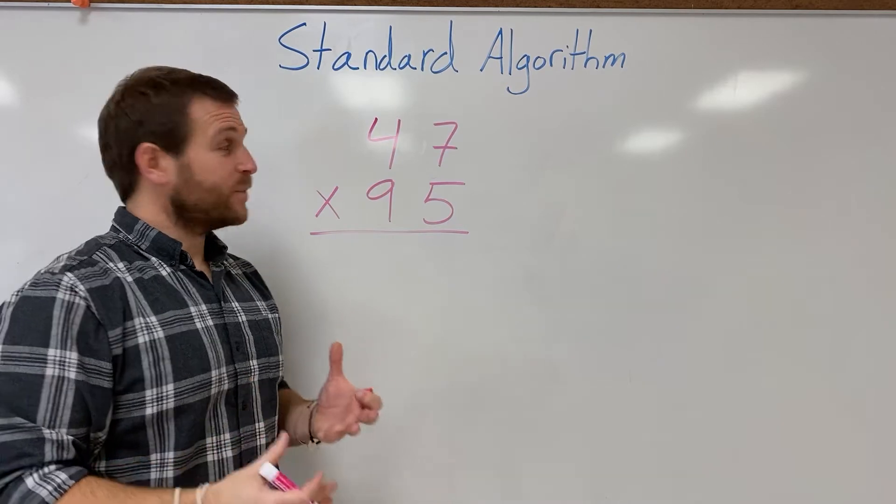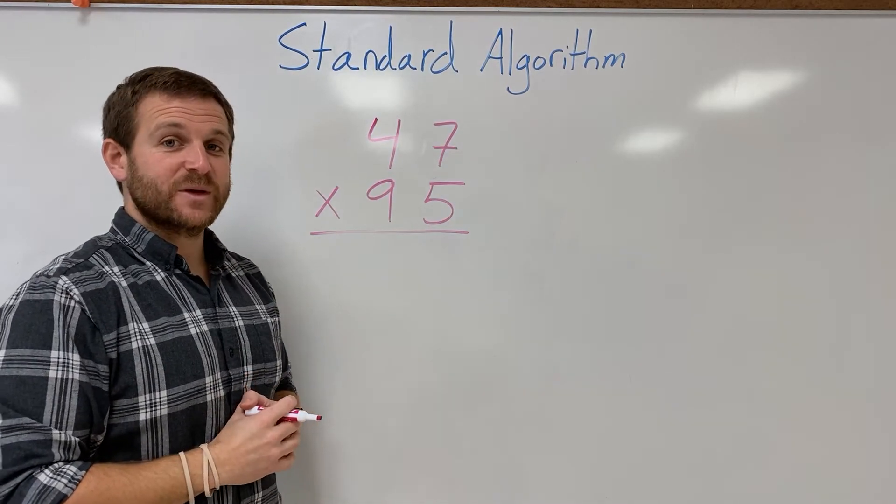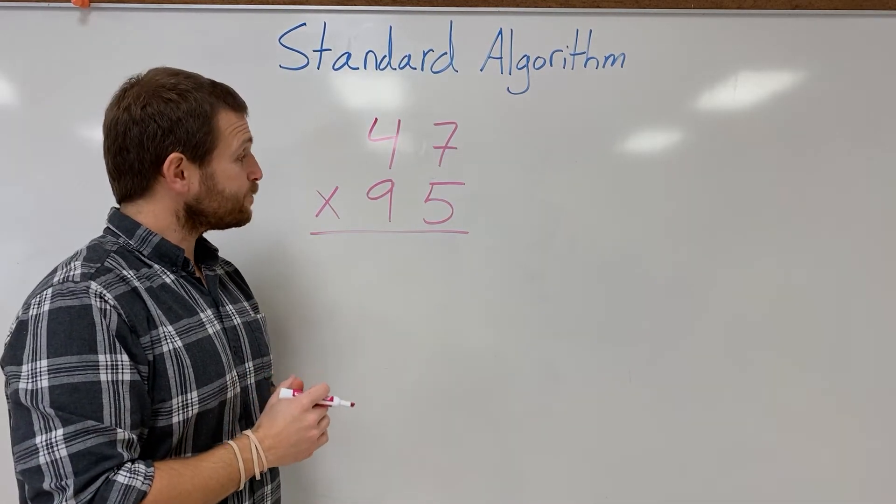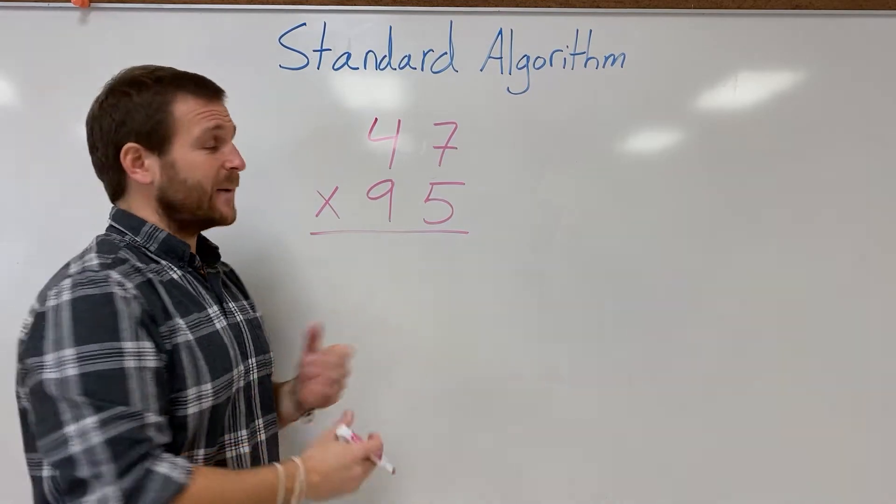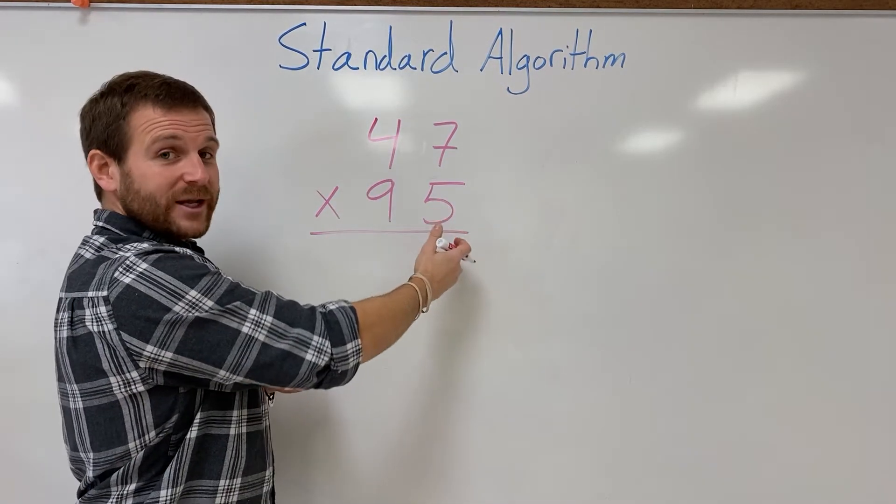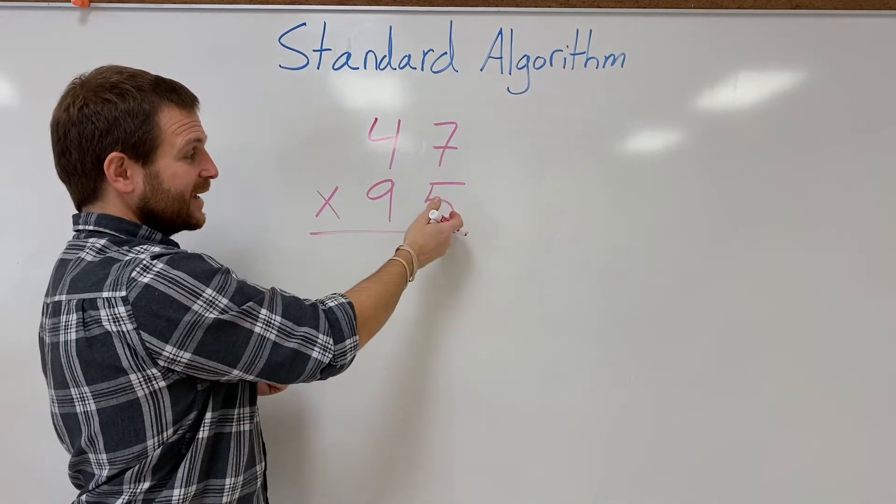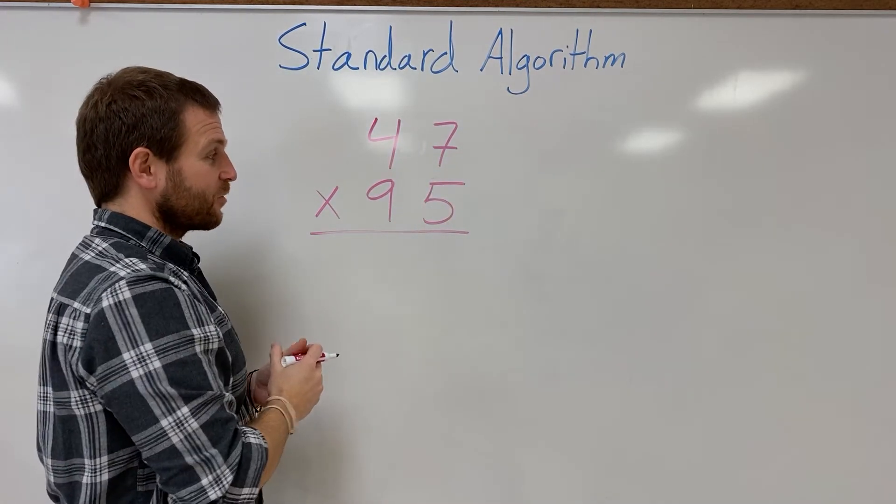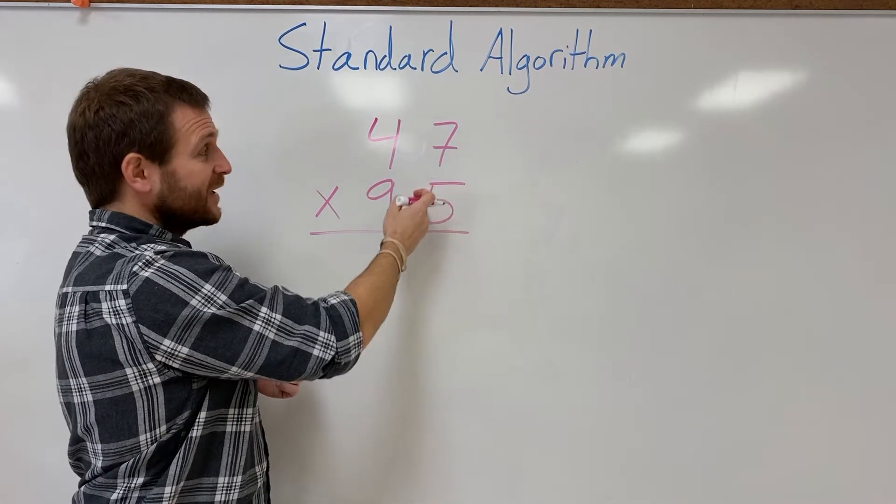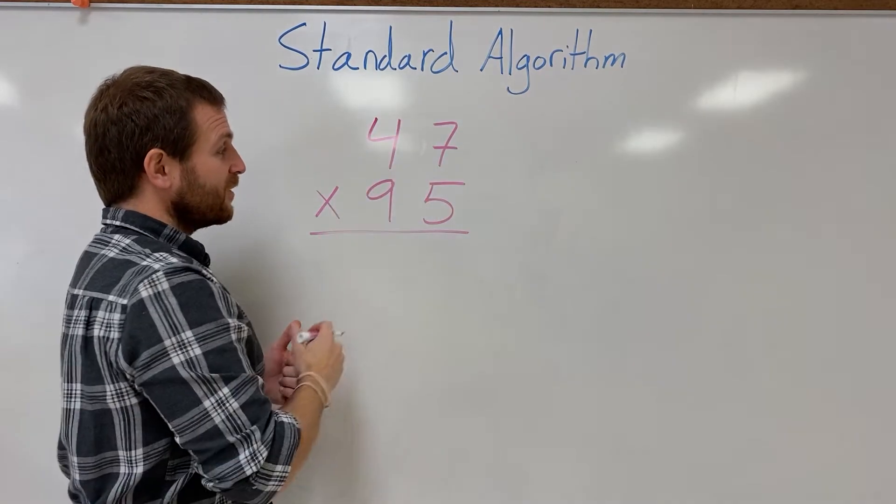Let's take a look at another example of double-digit times double-digit multiplication using the standard algorithm. Again, I'm gonna follow my pattern of starting in the bottom right corner. You can also start in the top right corner. I like the bottom right and work my way through. So I'm gonna start with my 5 and I know I need to multiply this by all of 47.